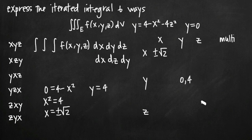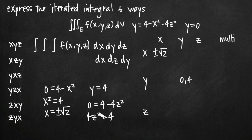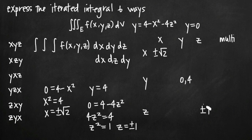For constant limits of integration for z, I plug in 0 for x and y and get 0 = 4 - 4z². Adding 4z² to both sides gives 4z² = 4, dividing by 4 gives z² = 1, so z = ±1. I'll note positive and negative 1 in the z-with-respect-to-z cell. These are my real number limits of integration for x, y, and z.